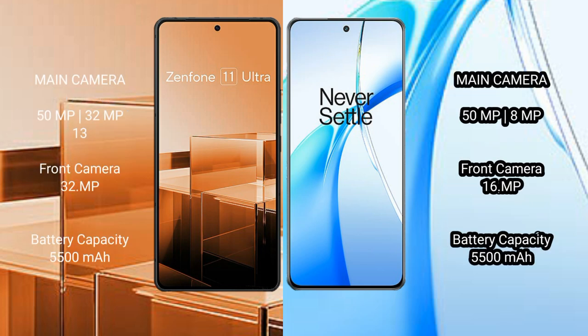Asus Zenfone 11 Ultra features a triple rear camera setup: 50MP main, 32MP, and 12MP sensors, with a 12MP front camera. OnePlus Nord CE4 features a dual rear camera setup of 50MP plus 8MP, and a 16MP front camera. Asus Zenfone 11 Ultra has a 5500mAh battery with 65W fast charging support. OnePlus Nord CE4 also has a 5500mAh battery but with 100W fast charging support.